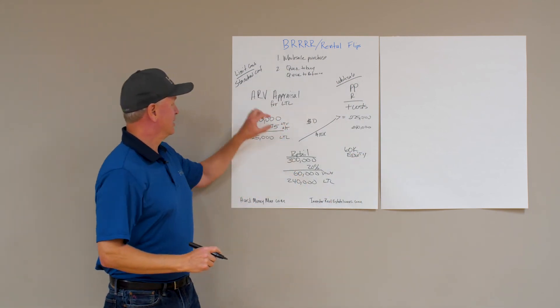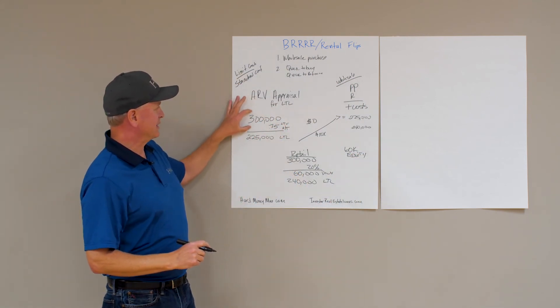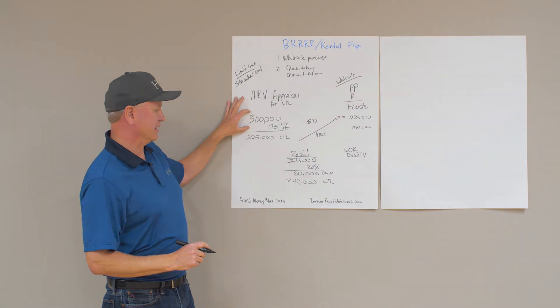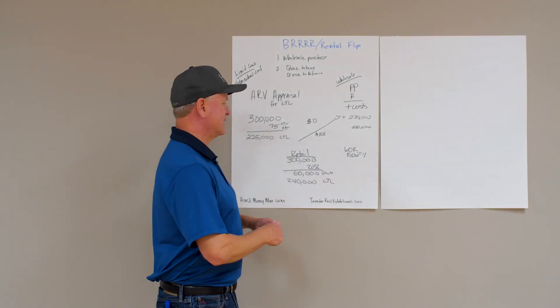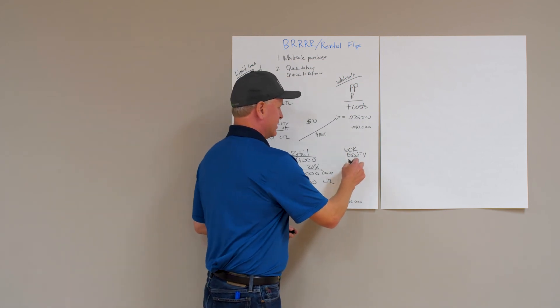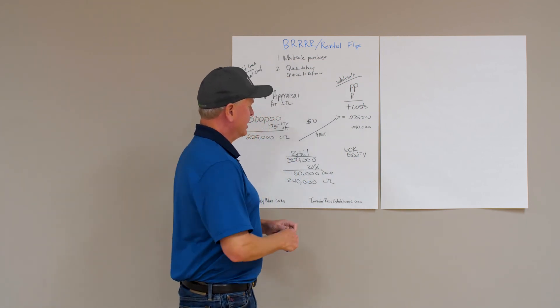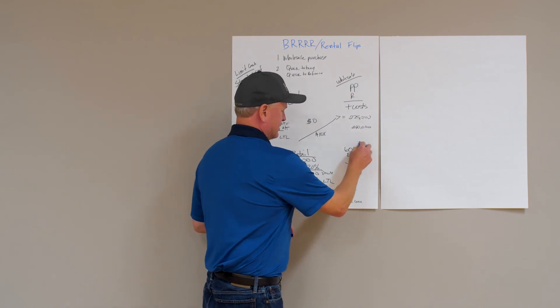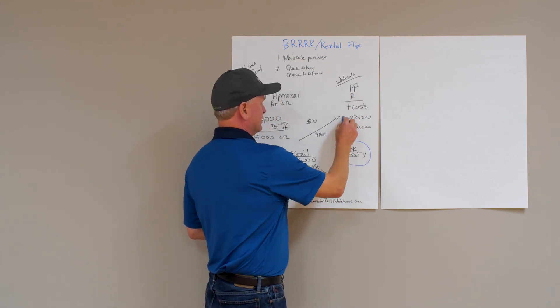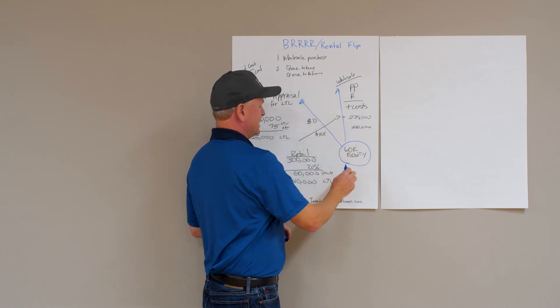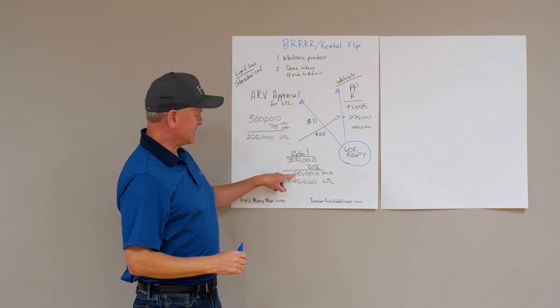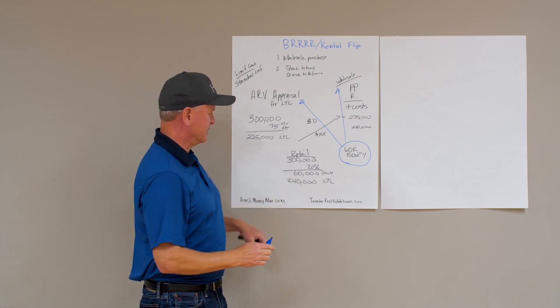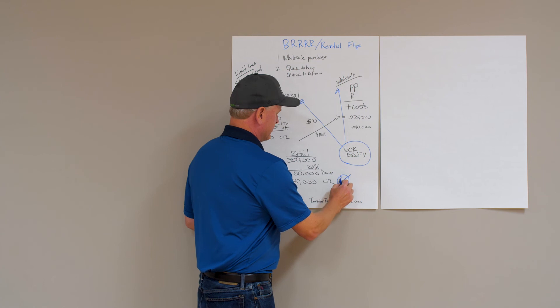This is all based on limiting our cash, but we're able to use the after-repair value here. With this properly set up BRRRR, you have $60,000 in equity that you created. When you're buying something at wholesale and using the appraised value, you're creating $60,000 in equity. Here, you put in $60,000 and have a loan for $240,000, so you really created no equity.